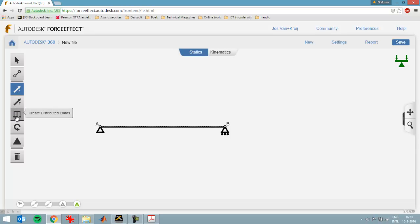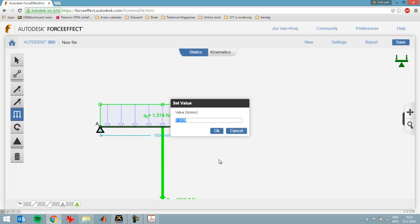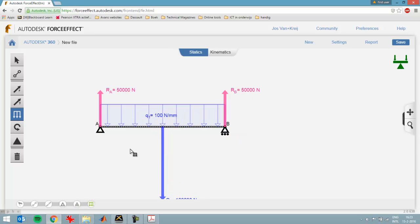I want to create a distributed load. I can do that by clicking over here and then dragging the load like that. Autodesk Force Effect will already give me some visual results immediately. Now I had a value of 100 Newton per millimeter that I used in the previous slide.